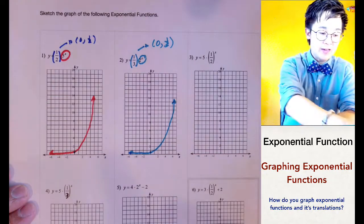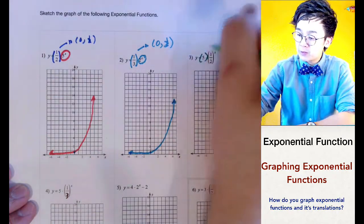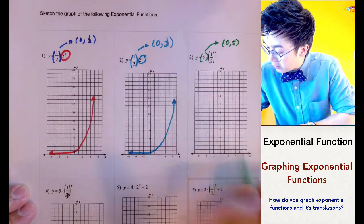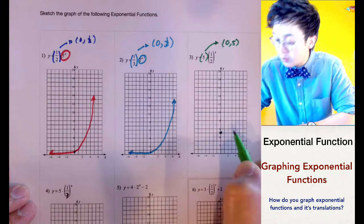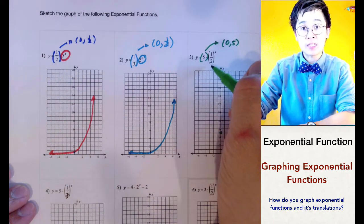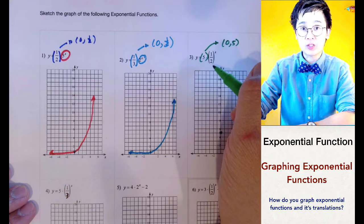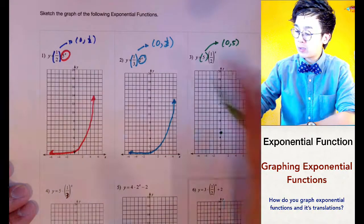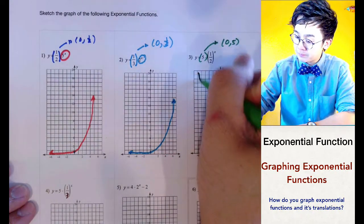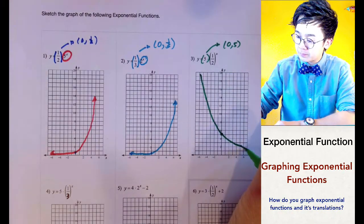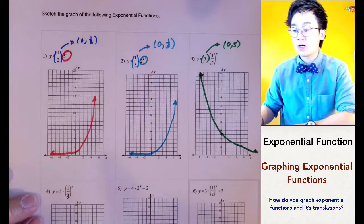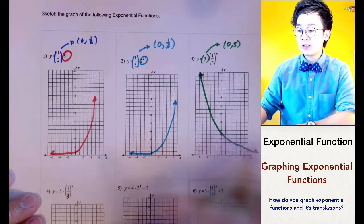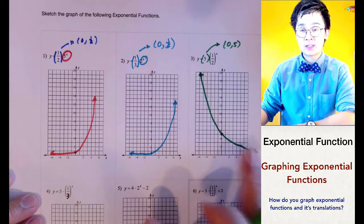For problem number 2, we have a different graph because our constant is 5, so the y-intercept will be at (0, 5). Notice that our a is now less than 1 — specifically one-half — which means the behavior will be a reflection from the y-axis. The graph will be decreasing from left to right. This is the graph of 5 times one-half raised to the x power, showing the difference between an a greater than 1 and an a less than 1 but not equal to 0.